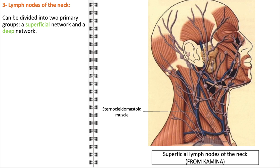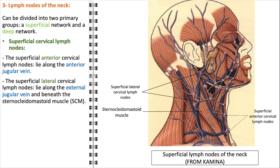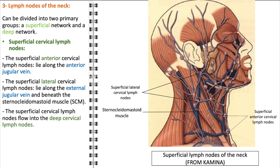Concerning the lymph nodes of the neck, these nodes are divided into two primary networks: a superficial network and a deep network, each playing distinct yet interconnected roles. The superficial anterior cervical lymph nodes, located along the anterior jugular vein, are tasked with draining lymph from the front parts of the neck, including the skin and superficial tissues. The superficial lateral cervical lymph nodes, positioned along the external jugular vein and just beneath the sternocleidomastoid muscle, are responsible for managing lymph drainage from the lateral aspects of the neck and the scalp. The significance of these superficial nodes lies in their role in filtering out pathogens, making them a first line of defense before the lymph progresses deeper into the body.